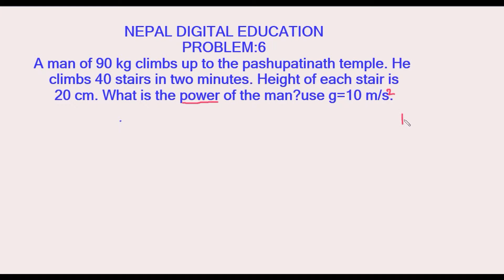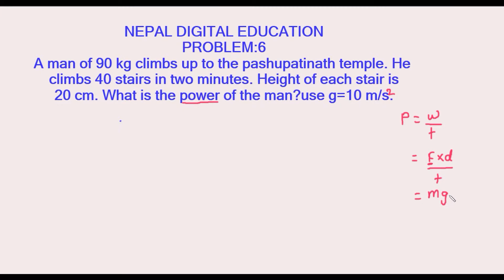We know that power is given by work done upon time taken, and work is given by force into displacement, or distance in the direction of force applied. We know that force equals mass into g, and we have displacement d and time t.